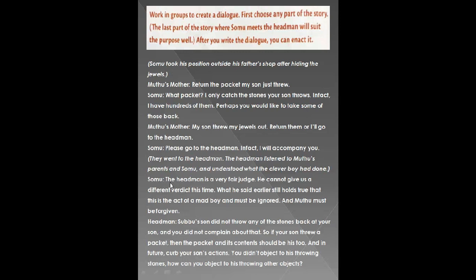At the headman's, Somu says: 'The headman is a very fair judge. He cannot give us a different verdict this time. What he said earlier still holds true — that this is the act of a mad boy and must be ignored, and Muthu must be forgiven.' Then the headman says, speaking to Muthu's parents: 'Subhu's son did not throw any of the stones back at your son, and you did not complain about that. So if your son threw a packet, then the packet and its contents should be his too. In future, curb your son's actions. You did not object to his throwing stones — how can you object to his throwing other objects?'